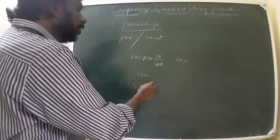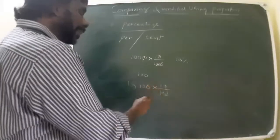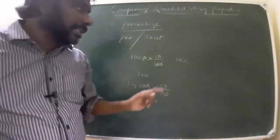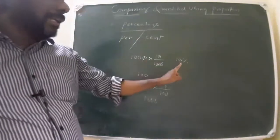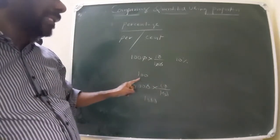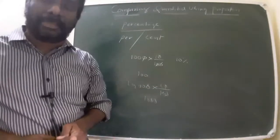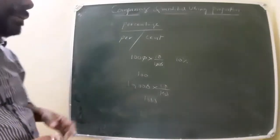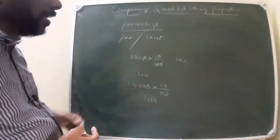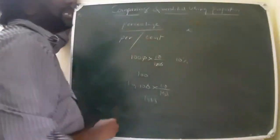For ten thousand, ten percent is ten by hundred into ten thousand, which is one thousand rupees. So for hundred, ten percent is ten rupees; for thousand, ten percent is hundred rupees; for ten thousand, ten percent is one thousand rupees. This is how percentage works.